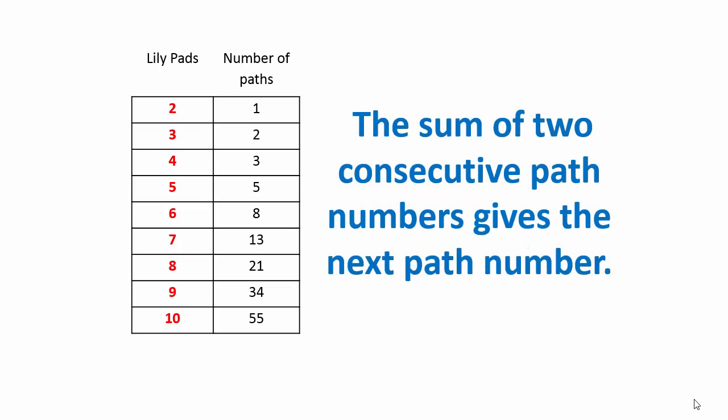One way of describing the pattern is to say that the sum of any two consecutive numbers gives you the third number. For example, one plus two is three, two plus three is five, three plus five is eight, and so on.